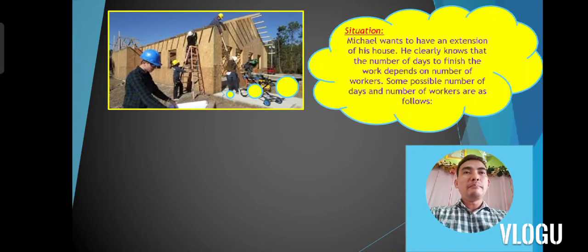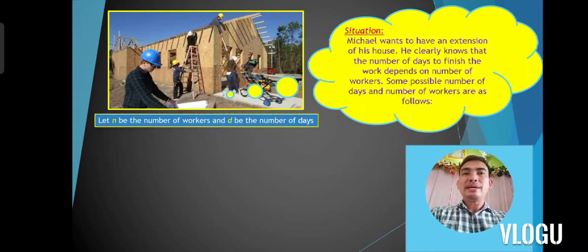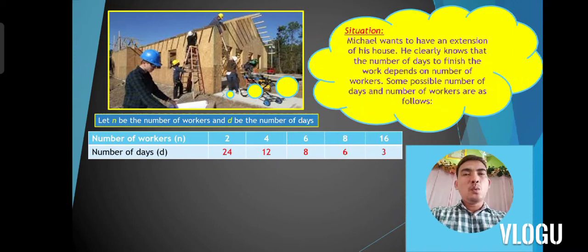Let's have the situation. Michael wants to have an extension of his house. He clearly knows that the number of days to finish the work depends on the number of workers. Some possible number of days and number of workers are as follows. Let N be the number of workers and D be the number of days. Looking at this table: the number of workers N are 2, 4, 6, 8, and 16, while the number of days D are 24, 12, 8, 6, and 3.